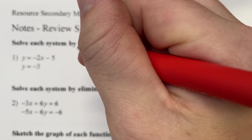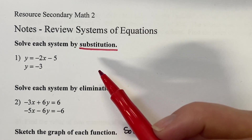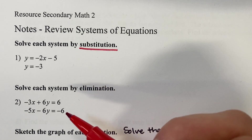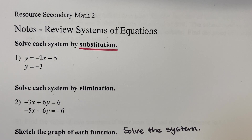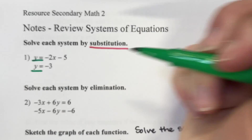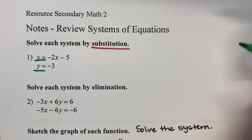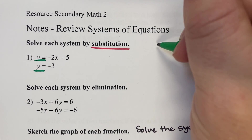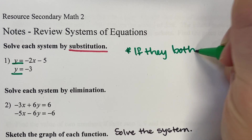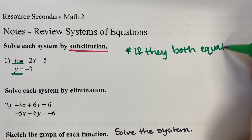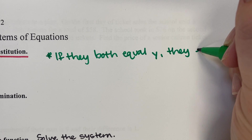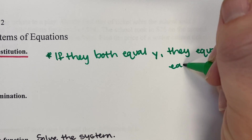The first method we talked about was substitution — you're replacing something, you are substituting it. What we really talked about with substitution is if they are both equal to y, they start with y equals and y equals, then they actually equal each other. So remember: if they both equal y, they equal each other.